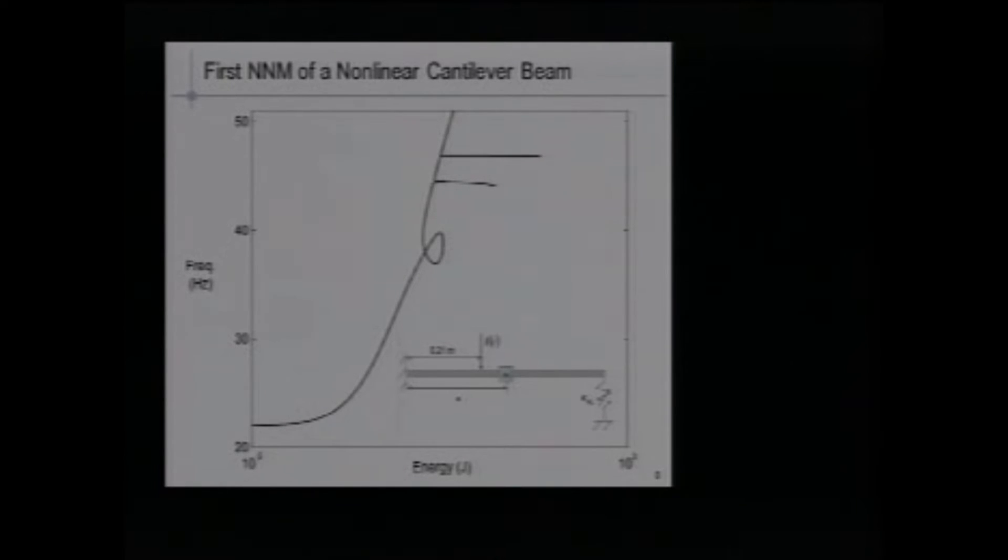I'm not giving details on how we compute nonlinear normal modes, we do it numerically using shooting and pseudo-arc length continuation. These are well-established techniques. Here you see the result for our example, it's a cantilever beam with a nonlinear spring at its free end, and we have added a small mass and we have harmonic forcing here. This is the undamped, unforced picture. This is the first nonlinear normal mode of the beam. We start at a natural frequency of 22 Hz, we increase due to the hardening effect of the cubic spring, and we observe some strange loops in the frequency energy plot. This is the frequency of the periodic motion, and this is the energy which is conserved in the Hamiltonian system.